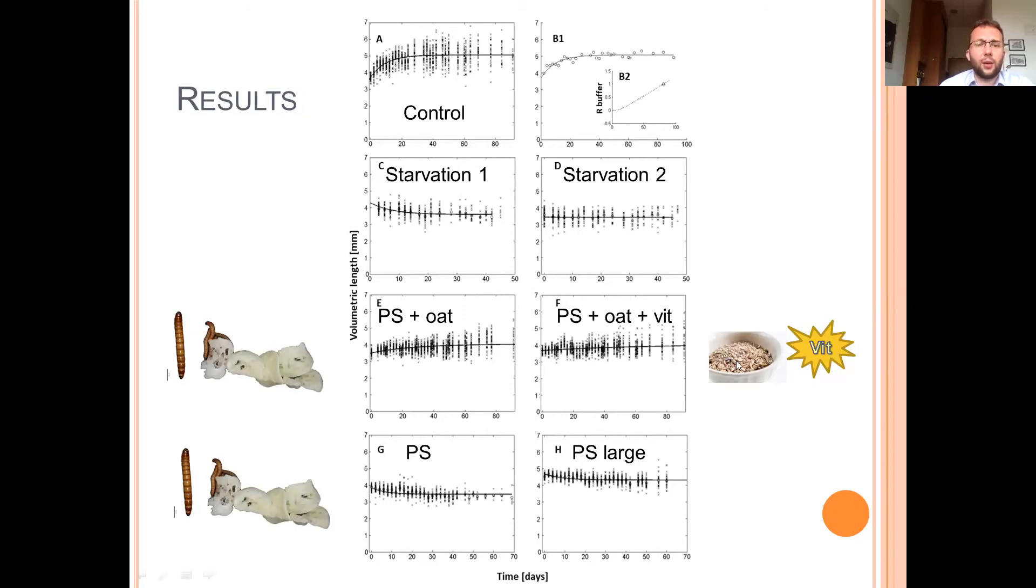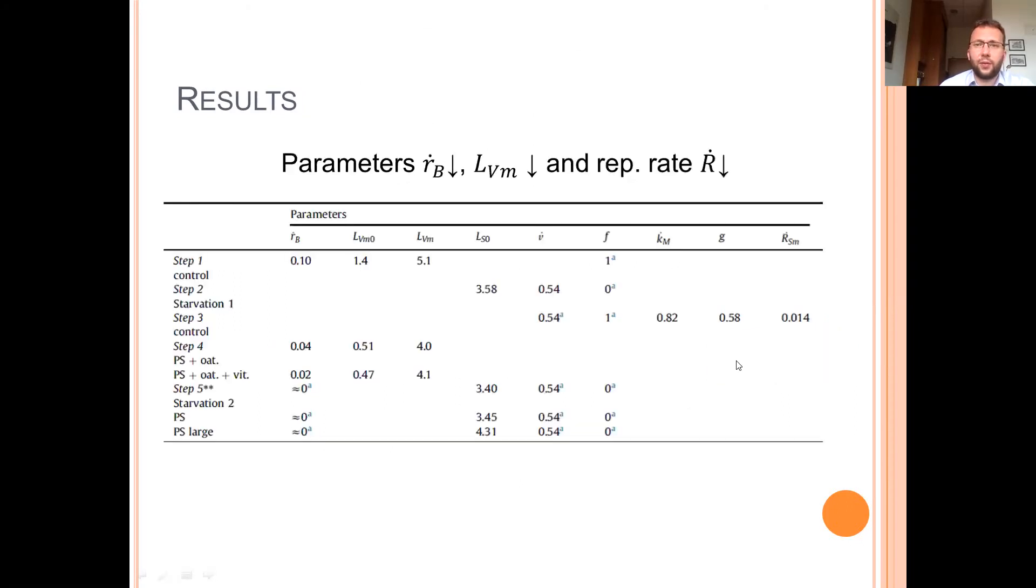And so let's look now at the parameter values. The growth rate, the growth rate Rb, was highest in the control group, and basically the value of Rb decreased in the other groups, as you see over here. The same concerns the maximum volumetric length.